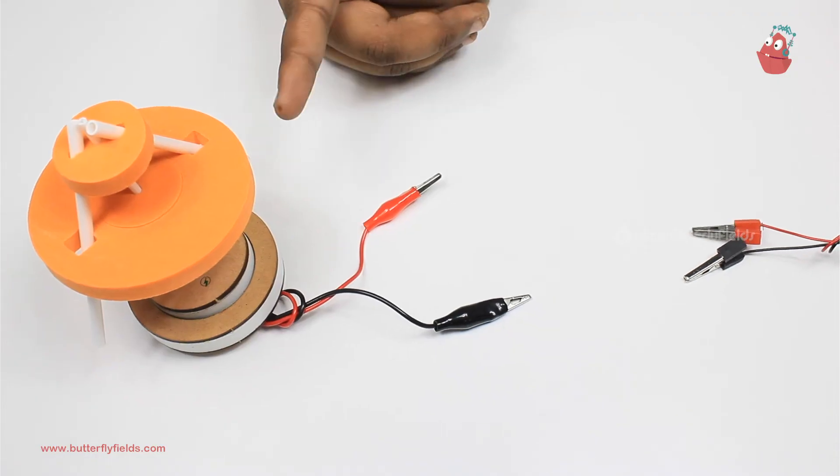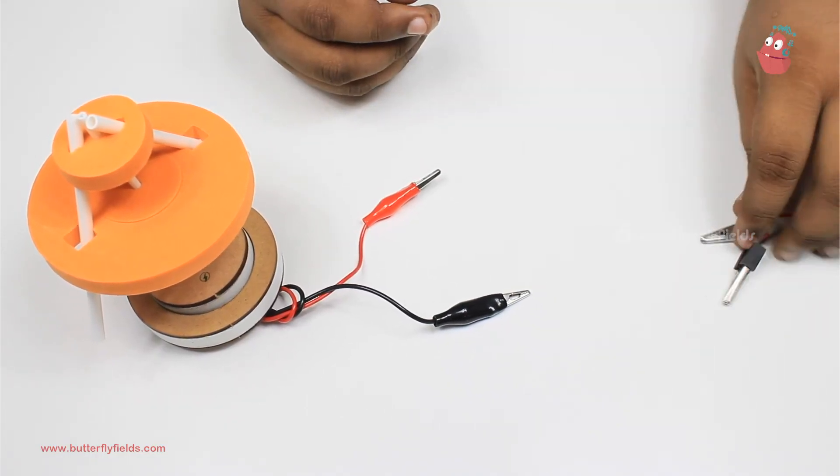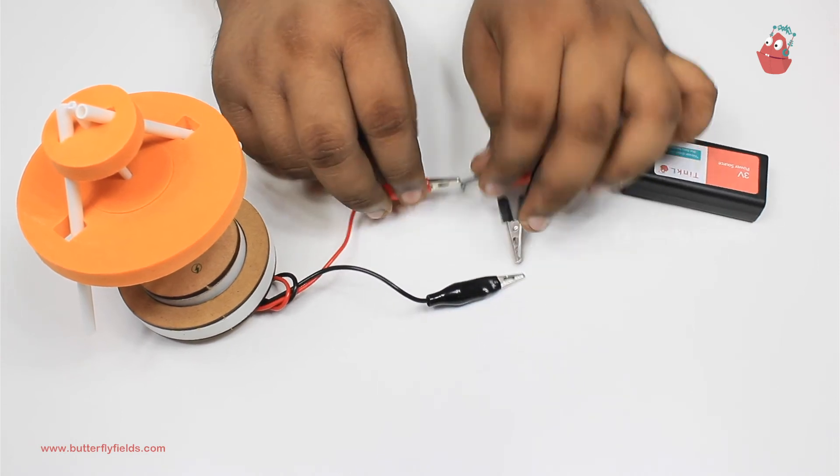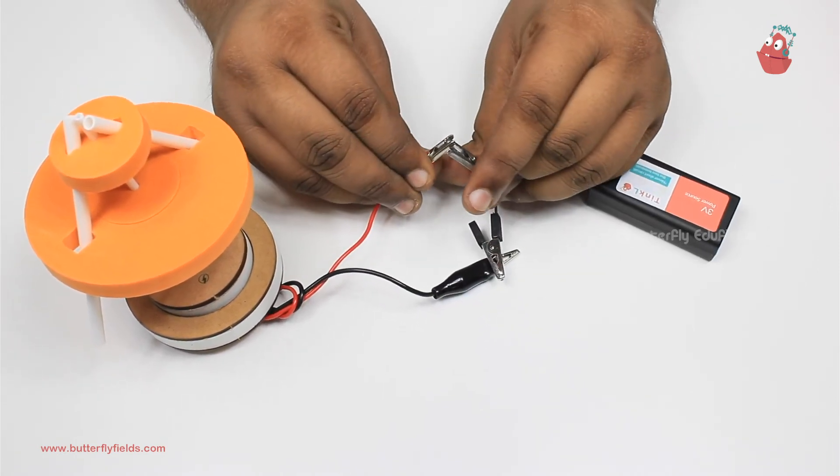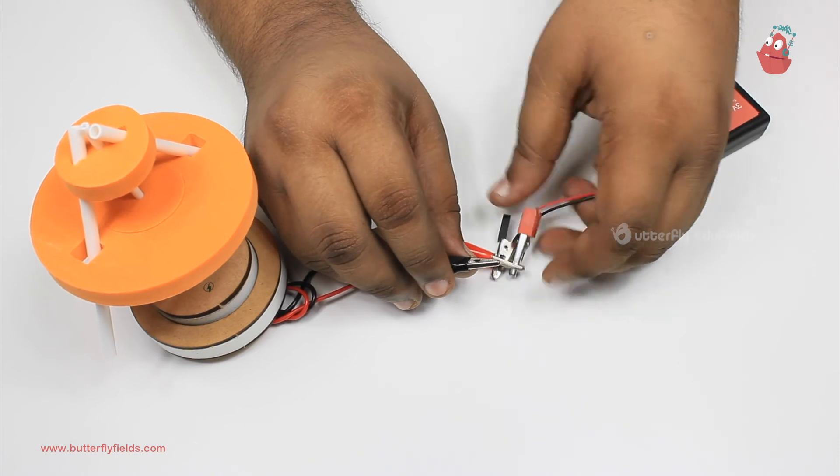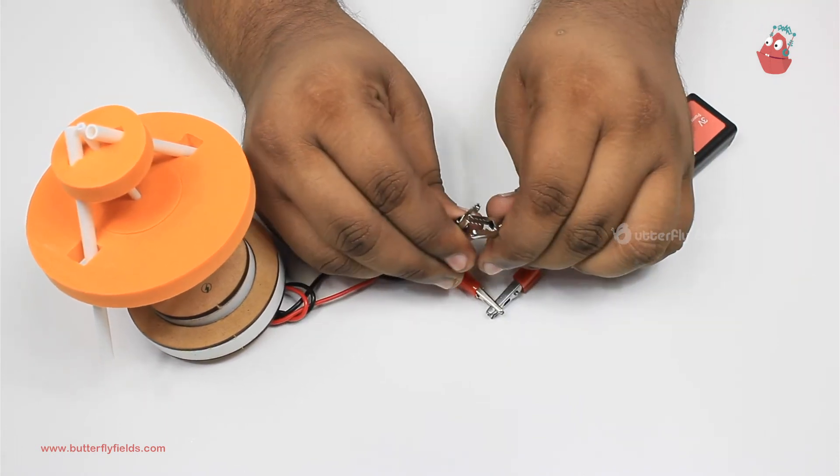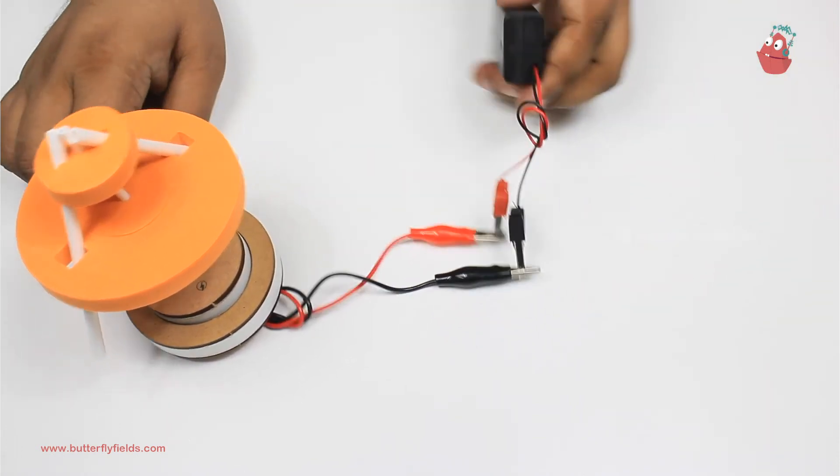Now our sprinkler is ready. For it to work, of course we need to connect the power source. Once the power source is connected we can take it to the water and let's see if it works. Let's go!